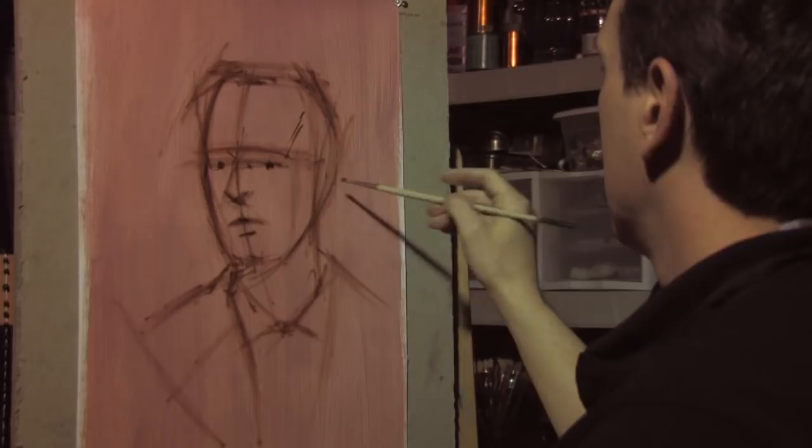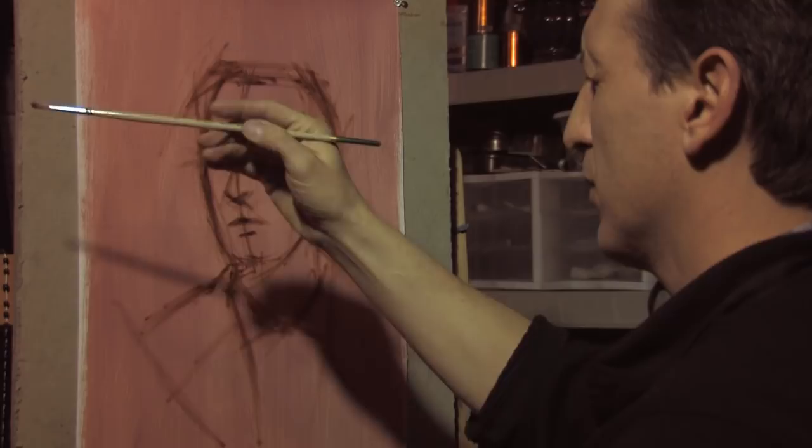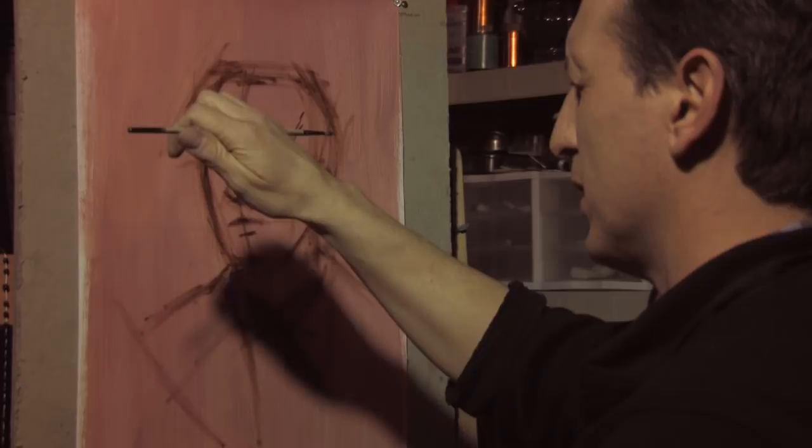Looking for the place of the ear. Slightly below the eyes. Definitely drops below the nose. Just looking for a level. Holding the brush up to level to see where the base of the ear is.